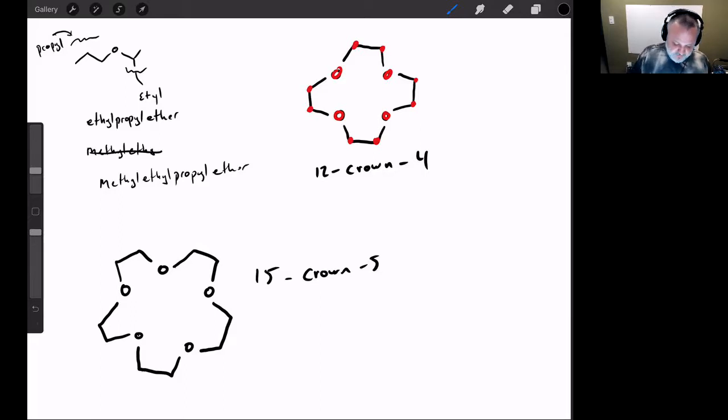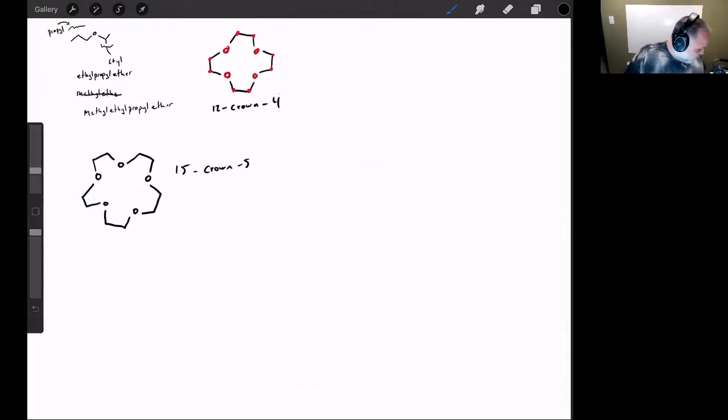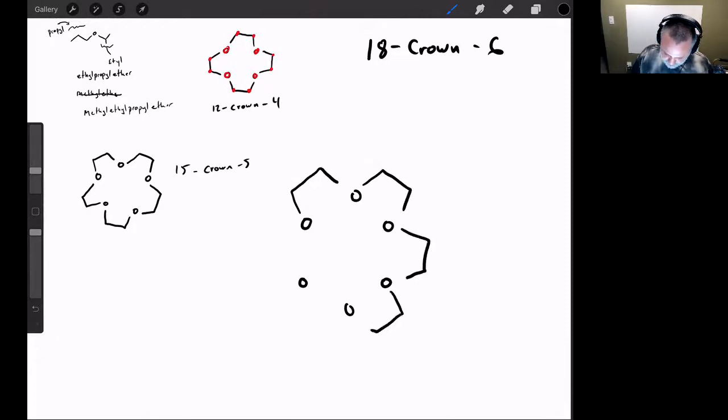Let's take one little last moment to take some crown ether practice and let's draw 18-crown-6. And so if I give you the name and have you draw a crown ether, you have to disassemble it in the reverse fashion. Remember the six is the number of oxygens. And the 18 is the number of total atoms in the ether. They're always going to be separated by a two carbon chain. And there I have the 18-crown-6.